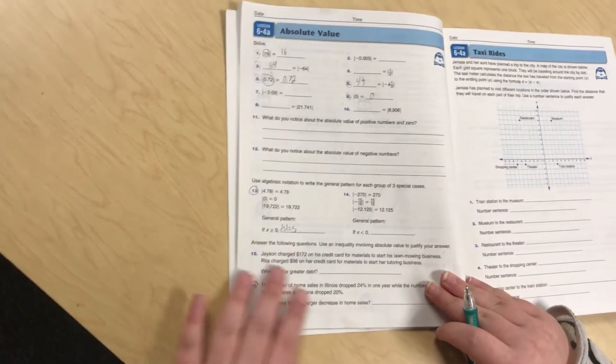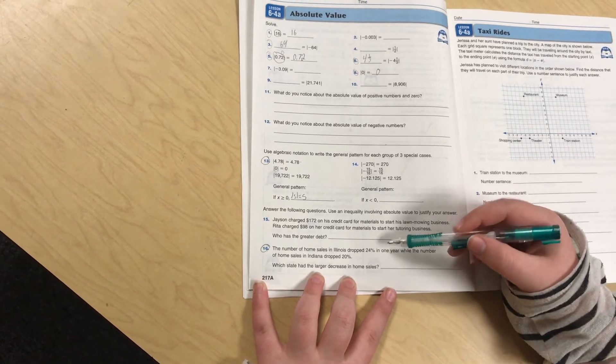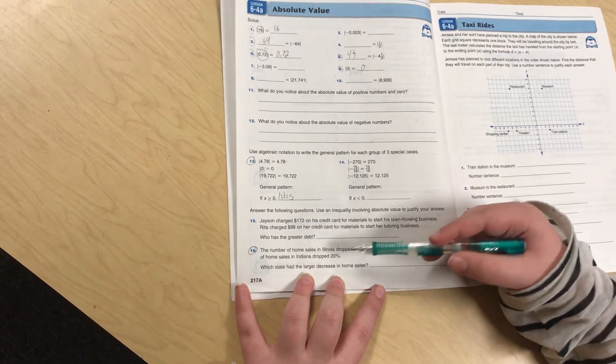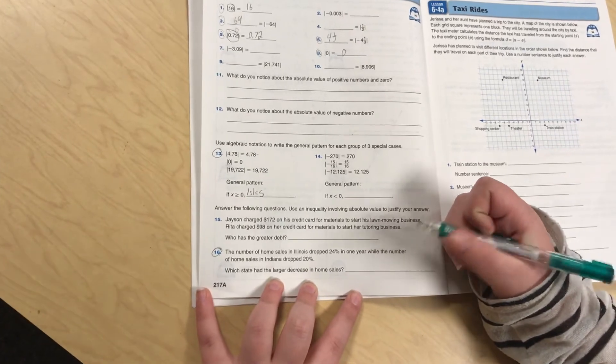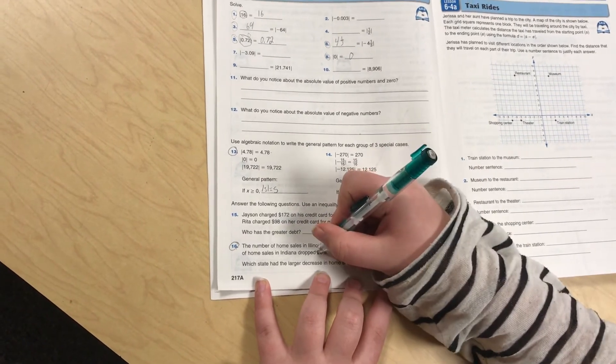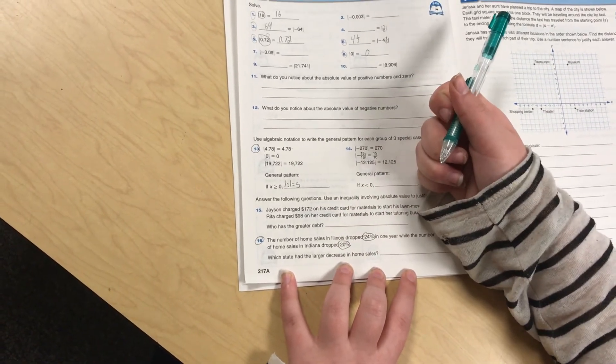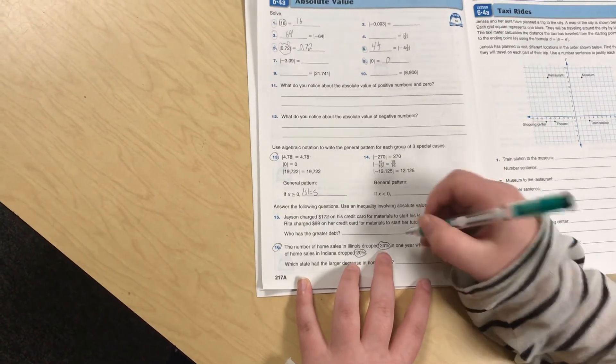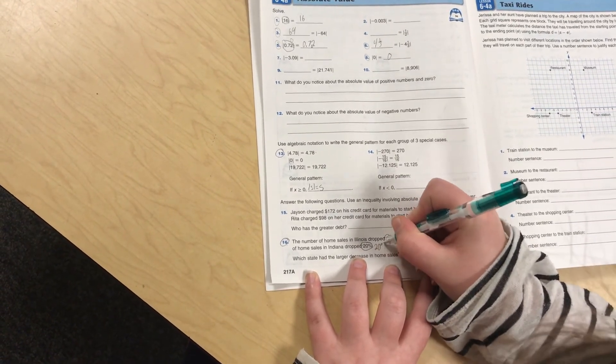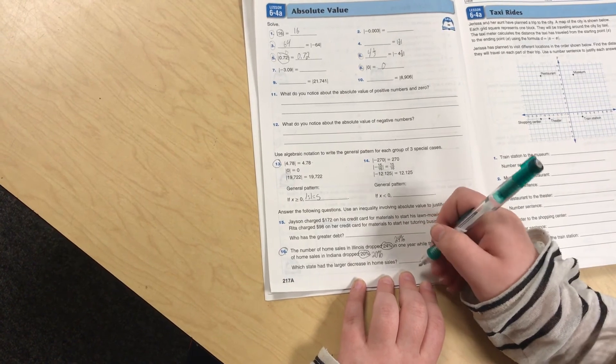And then word problem. The number of home sales in Illinois dropped 24% in one year, while the number of home sales in Indiana dropped 20%. Which state has the larger decrease in home sales? So let's say that we have negative values, and it's negative because it dropped that much. If it raised that much, then it would just be positive. So the absolute value of this would be 24%, and then the absolute value of this would be 20%. And then you can see that the bigger decrease would be 24%, which would be Illinois.